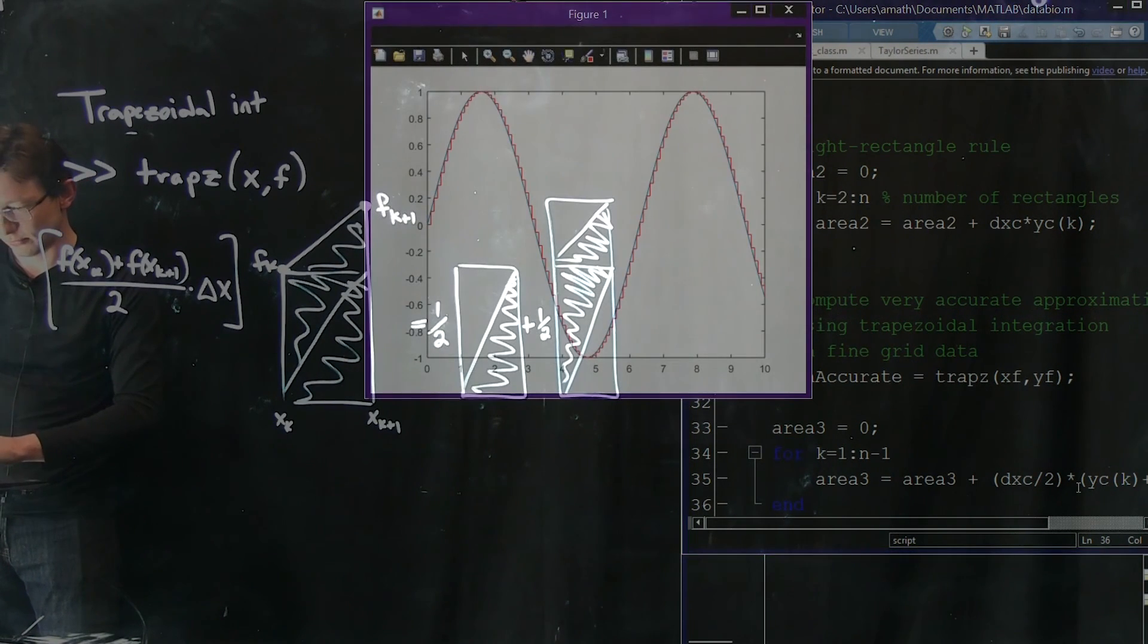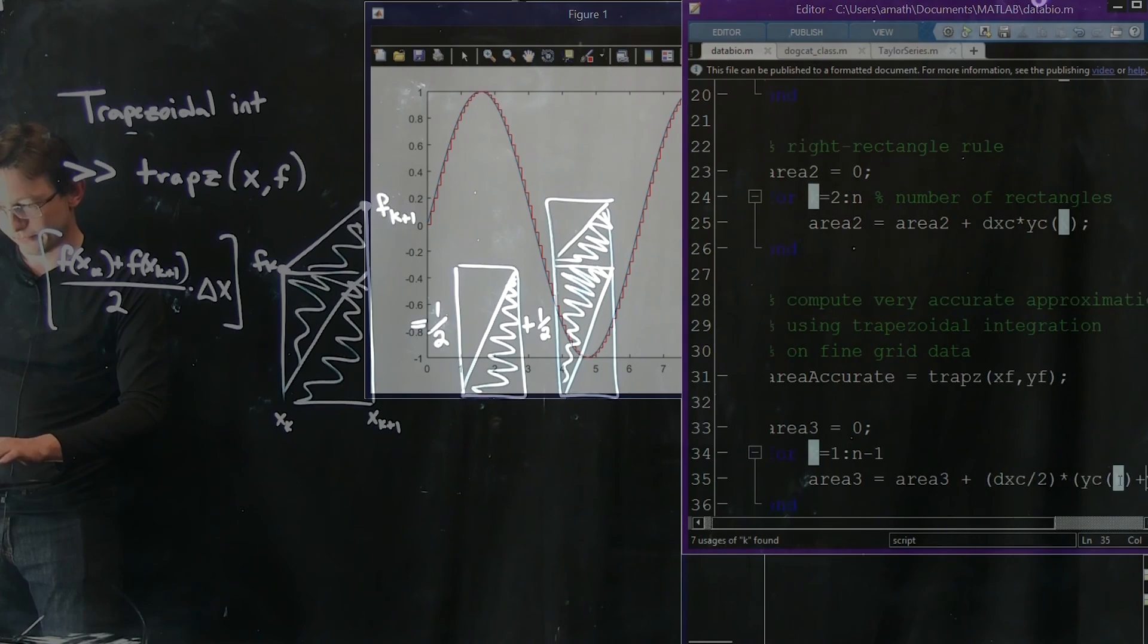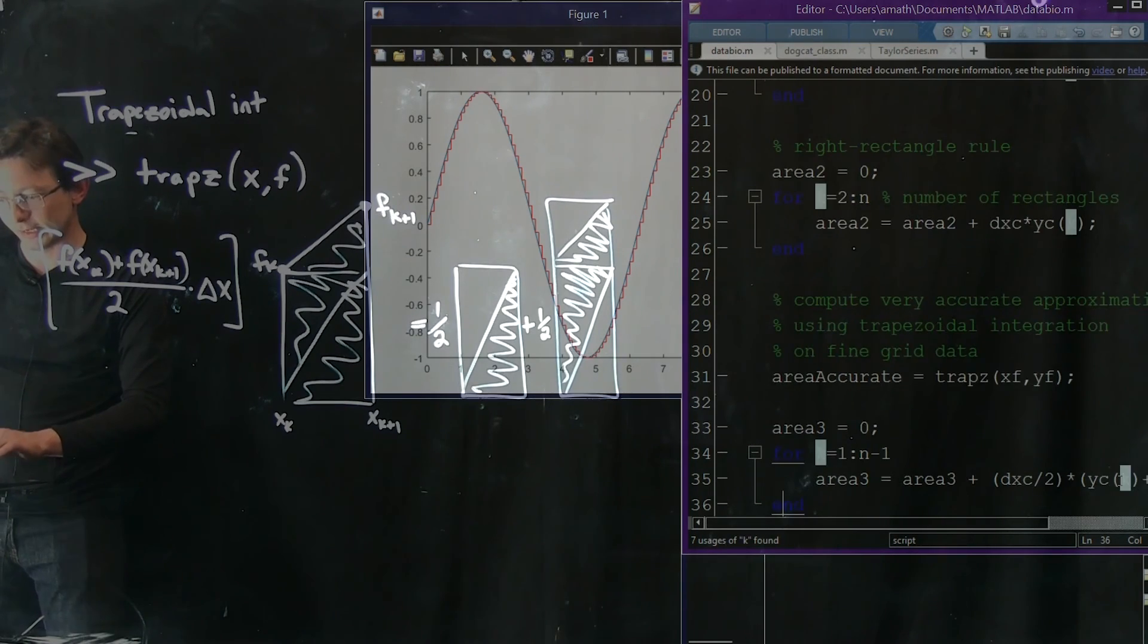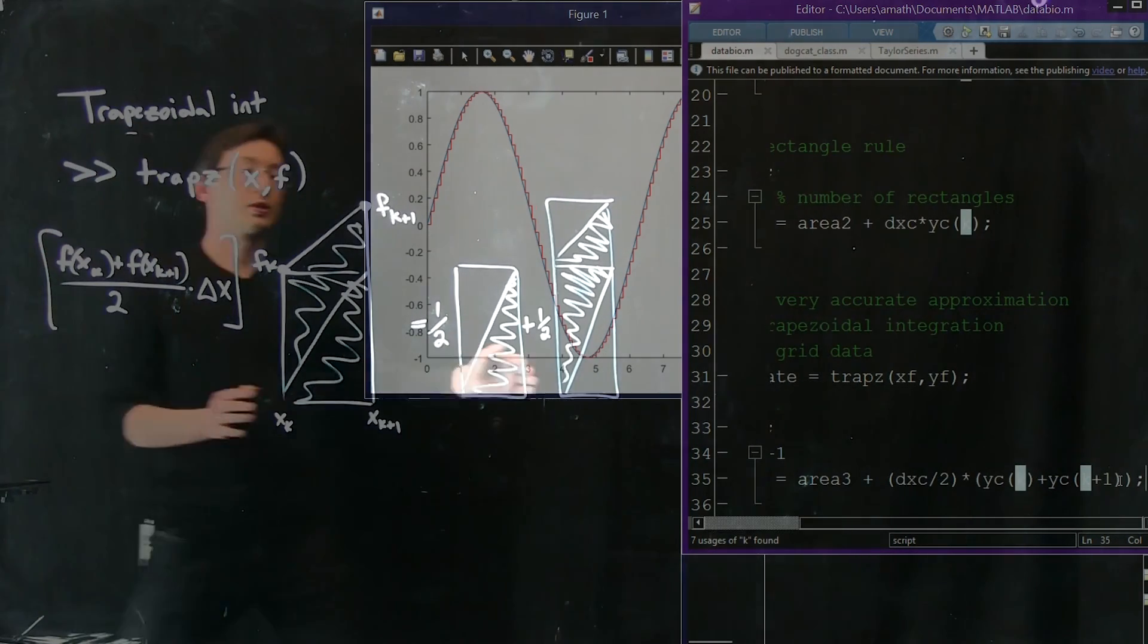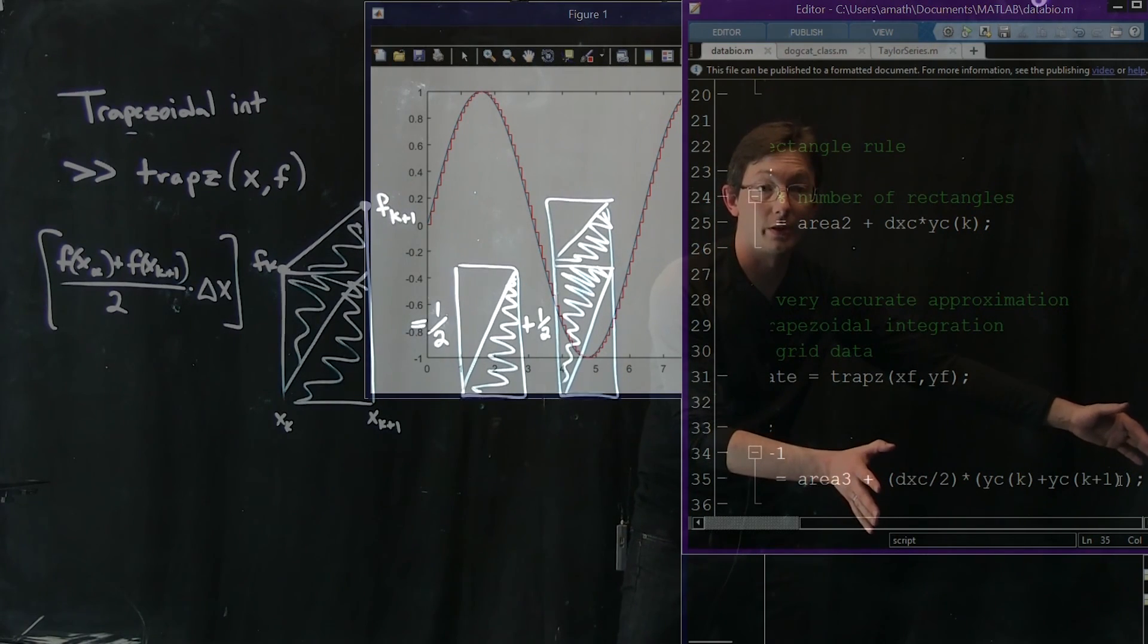I'm going to run it. No errors. This is the expression here. We've essentially just coded up the area of the trapezoid that we derived.